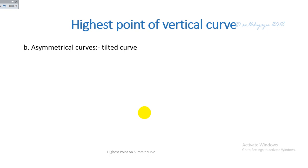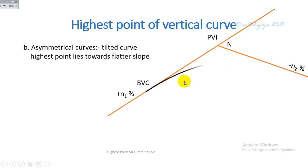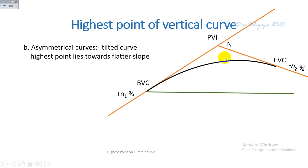For the asymmetrical curve, if the ascending gradient n1 and the descending gradient n2 are not equal, it is an asymmetrical summit curve. In that case, the highest point on the summit curve lies toward the flatter slope.